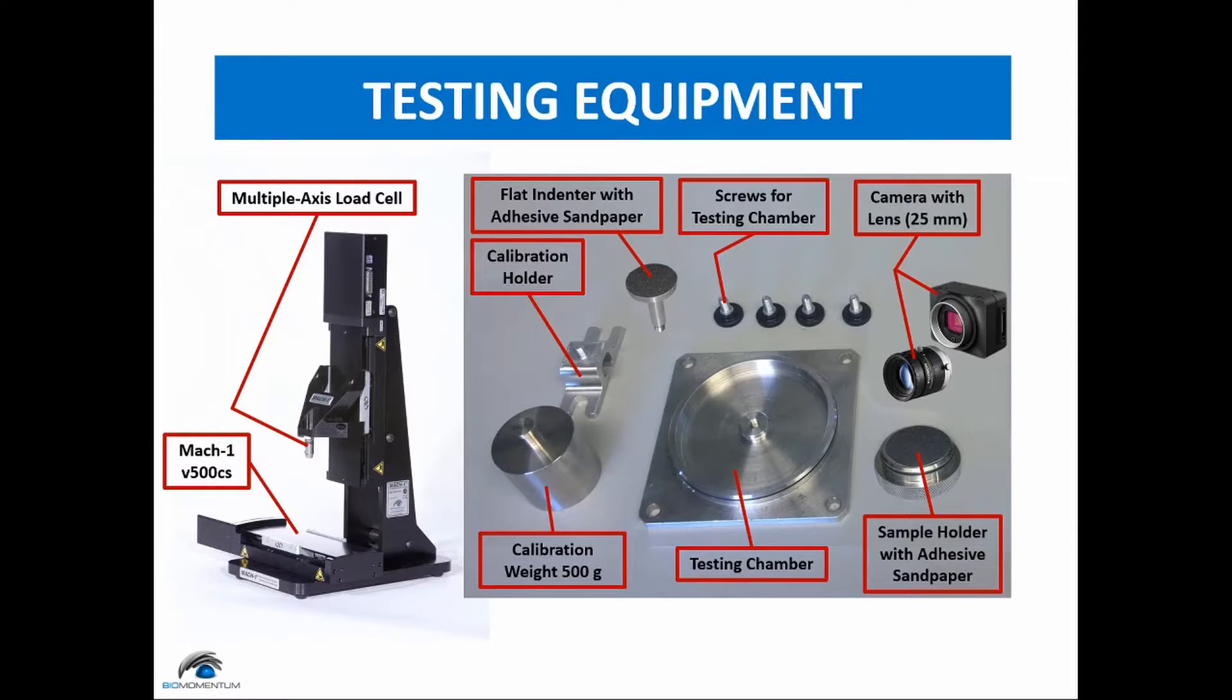For the mechanical testing required to determine the shear properties of neoprene and hydrogel samples, you will need a Mach1 V500 mechanical tester with CS configuration,